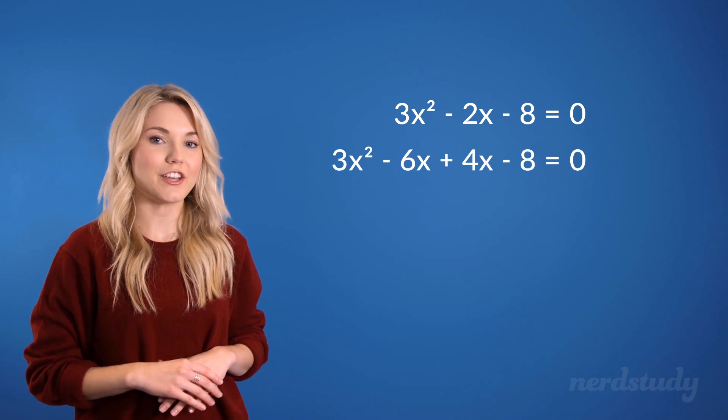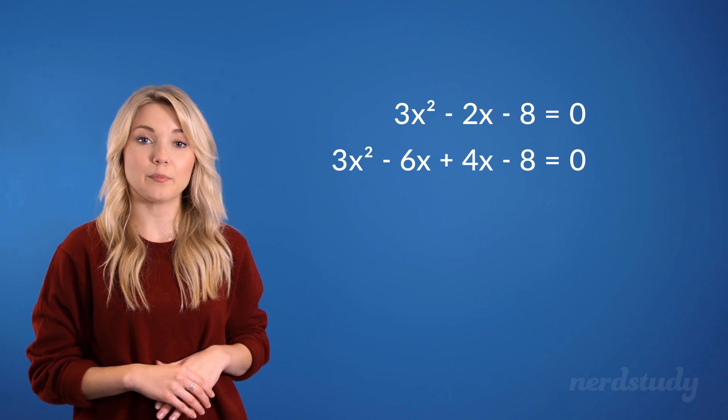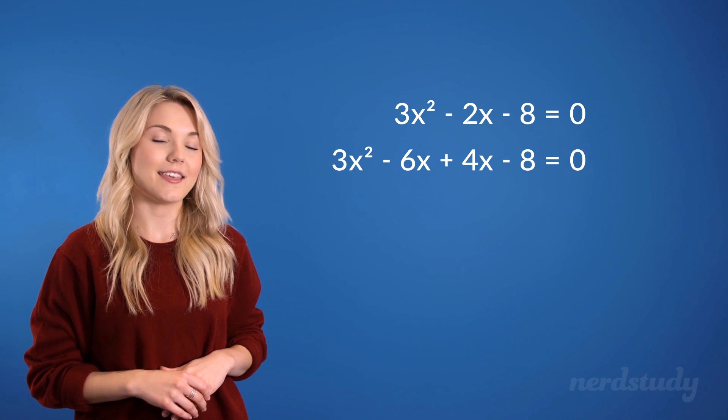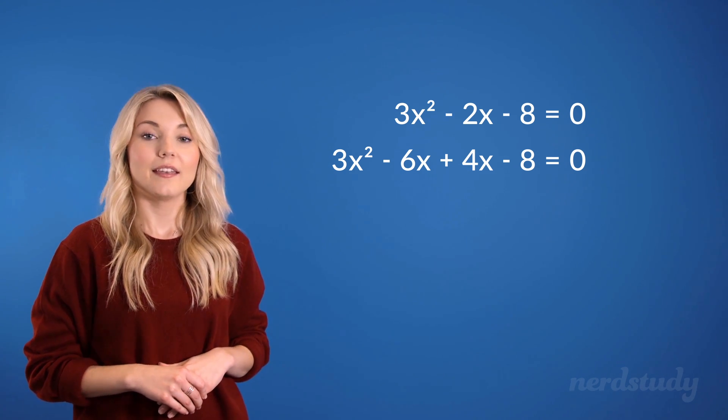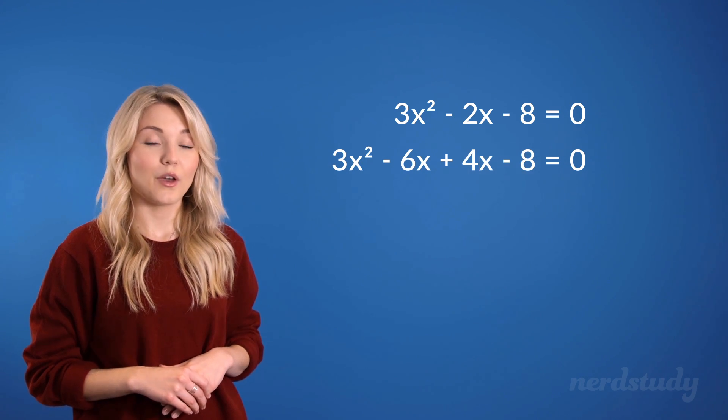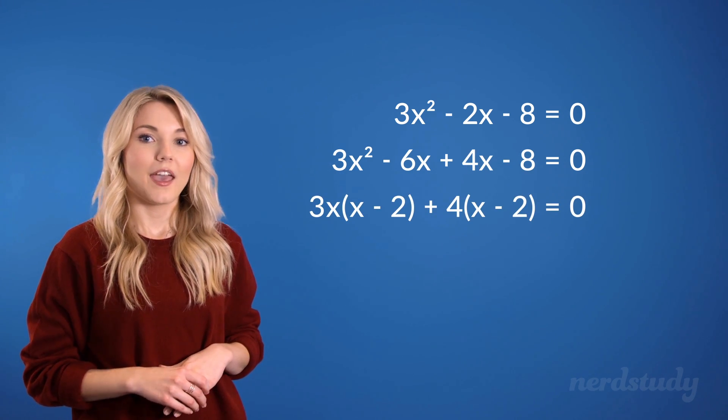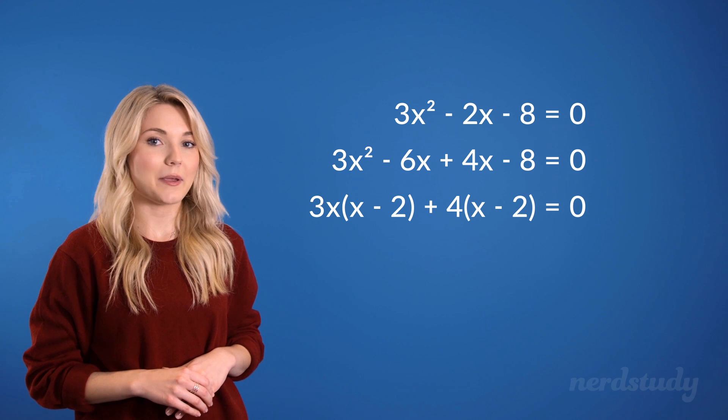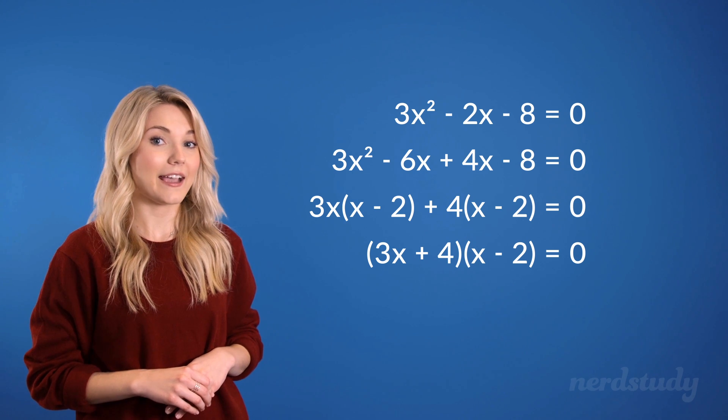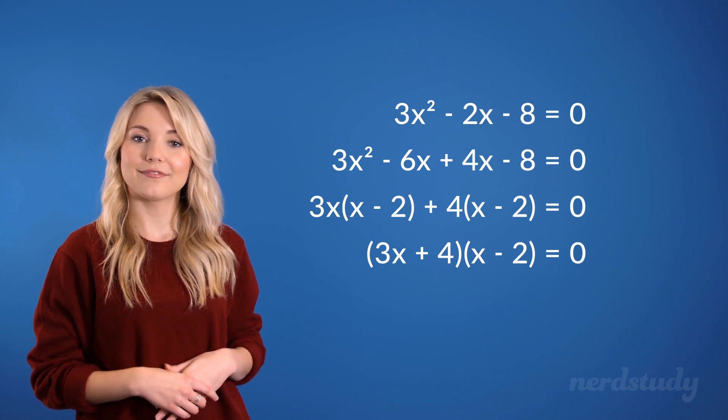Notice how we didn't change the equation at all, since if we simplified this, we would just get this again. So it still represents the exact same graph. Now we can factor out a 3x from here and a 4 from here. We are left with the following. And we know that this is just an expanded version of a factored form, which is 3x plus 4 multiplied by x minus 2 equals 0.